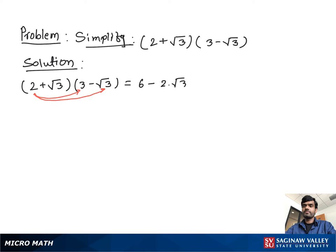Plus square root 3 times 3 is 3 times square root 3, minus square root 3 times square root 3. Then we do simplification, so we get 6.